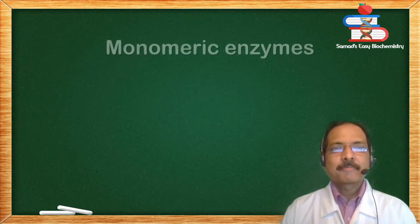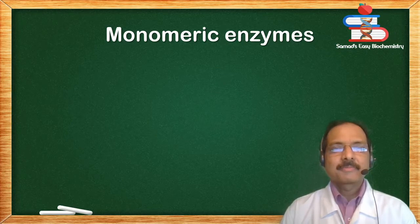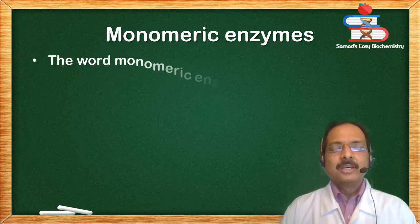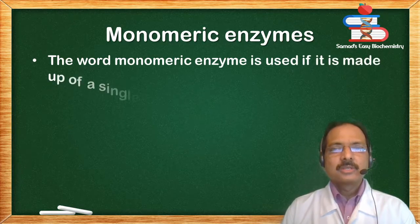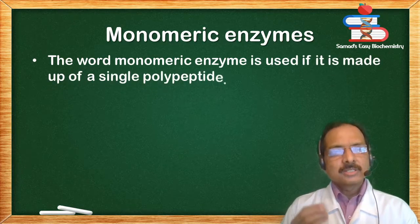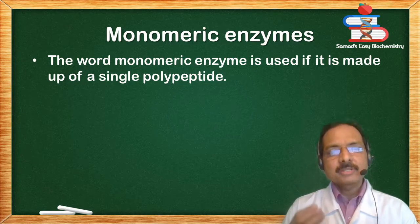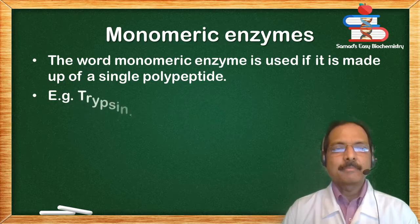Monomeric enzymes: the term monomeric enzyme is used if it is made up of a single polypeptide. If the enzyme is made up of a single polypeptide chain, then it is monomeric. Example: trypsin.